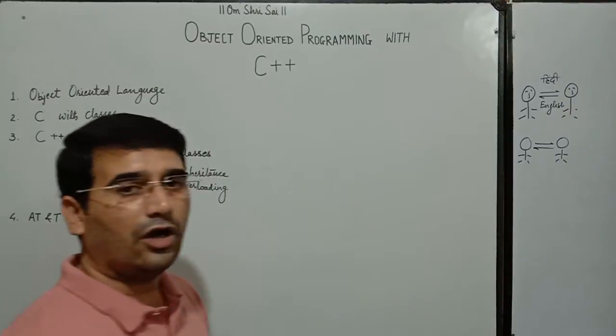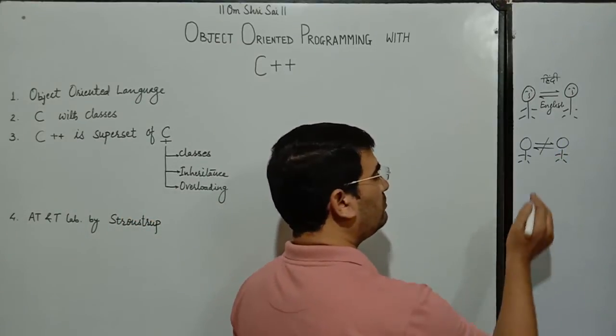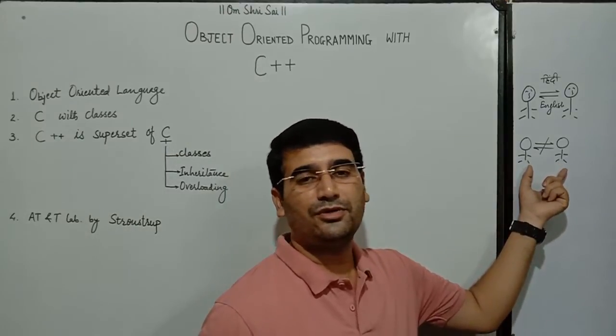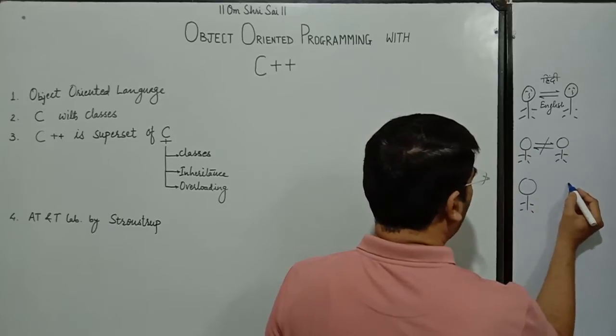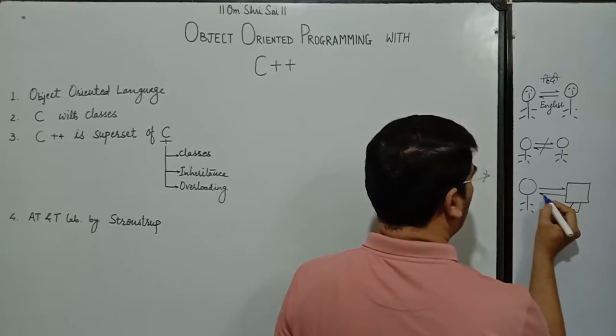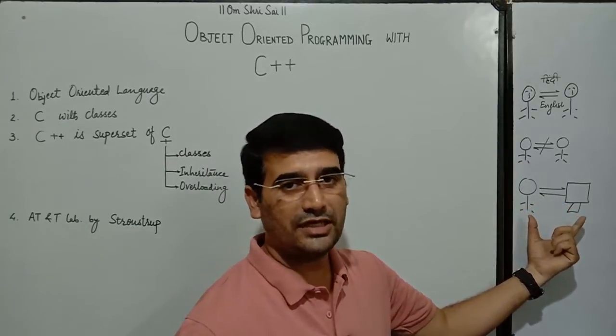But if a common language is not there in between two sides, then the communication will not be possible. In that case, no communication will be established between two sides. Now, if we talk about today's scenario, we normally communicate with the computers or machines. Again, we require some common languages which could be understood by both the sides.